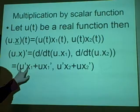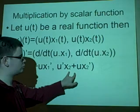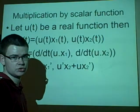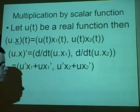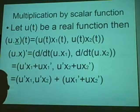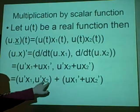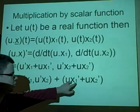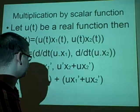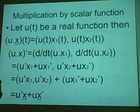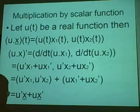Which gives us u'x₁ plus ux₁' and u'x₂ plus ux₂'. Now, because we've got the sum, we can split it up into two different additions. So we have u'x₁ and u'x₂ plus ux₁' plus ux₂'. And if we look at this a bit further, we can see that this equals u'x plus ux', which is the product rule.